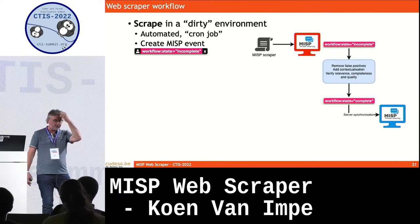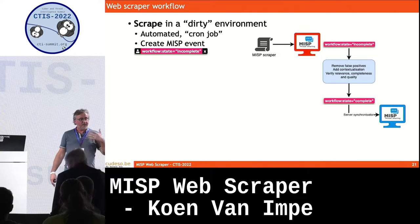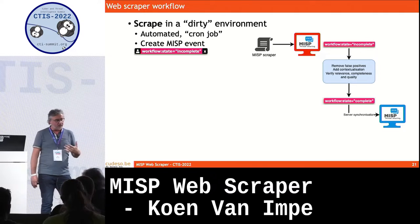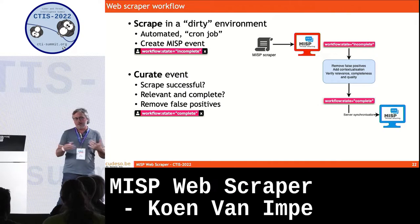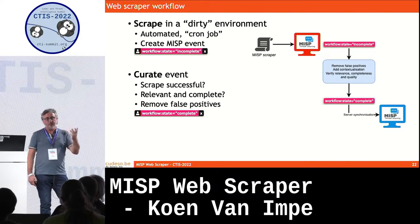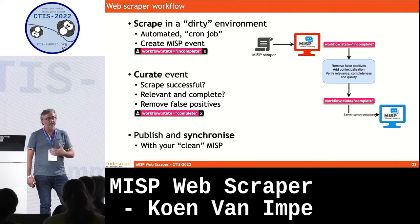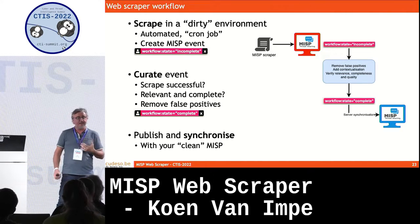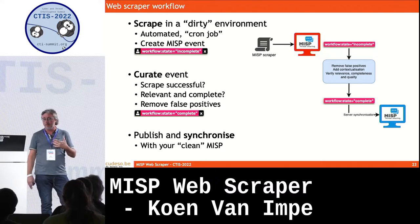Typically you're going to use MISP Scraper in a dirty MISP environment — a MISP environment that you only use to crawl these websites. By default, the new events that are created are set in a workflow state of incomplete. Then you have to do some curation and verification: are the crawled events useful? Do they contain relevant indicators? Are there any errors? Once you're happy with the result, you switch the workflow state from incomplete to complete, publish the event, and the event gets synchronized to your clean MISP instance to distribute to your constituency.